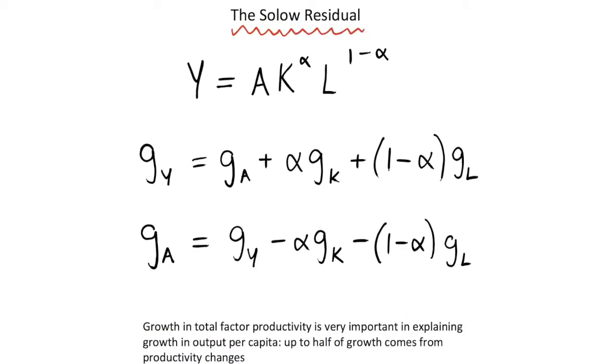We've looked at the Solow growth model and we can use this neoclassical Cobb-Douglas production function where we have output is given by our technology parameter A multiplied by the capital stock to the power of alpha.